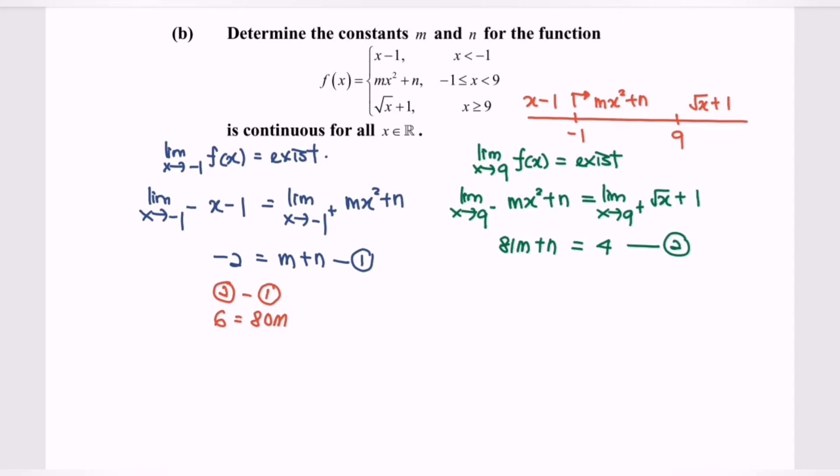Simplify the situation and we will have m equals 6 over 80, and then finally m equals 3 over 40.